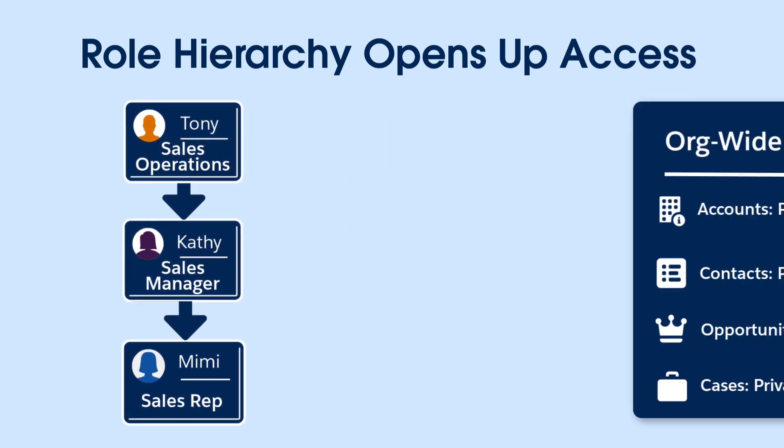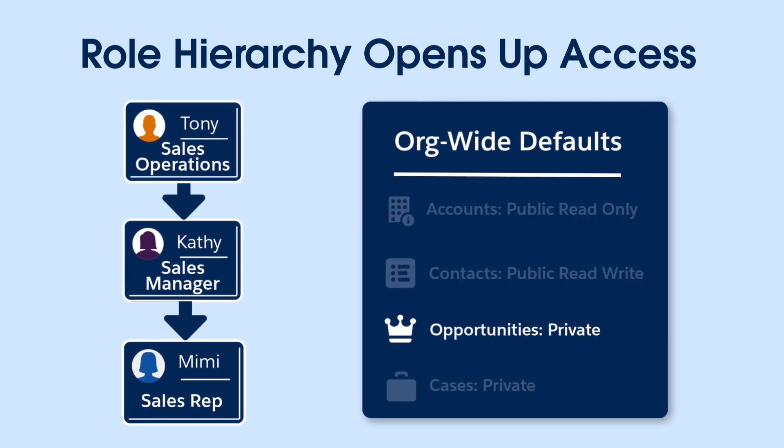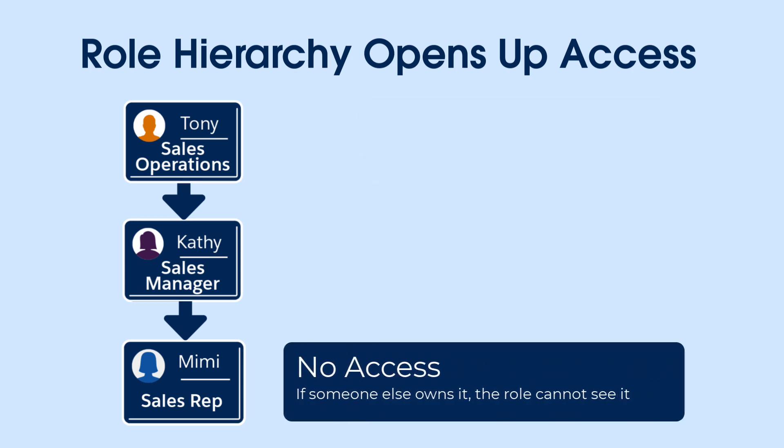For example, since opportunities are private at the org-wide default level, the role hierarchy lets us open up access in one of three ways. For each role, we can choose one of the following. No Access — in essence, this maintains the org-wide default of private. People in this role aren't able to see opportunities they do not own, even when associated with accounts they do own. We'll use this for the inside sales rep role.